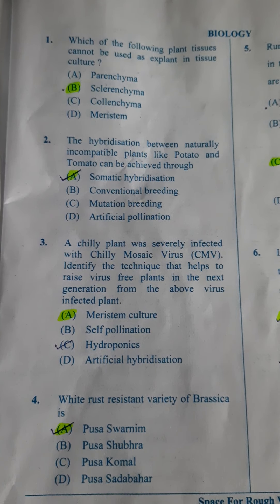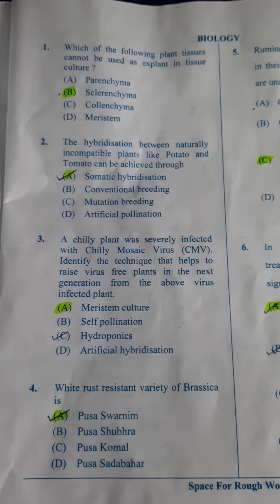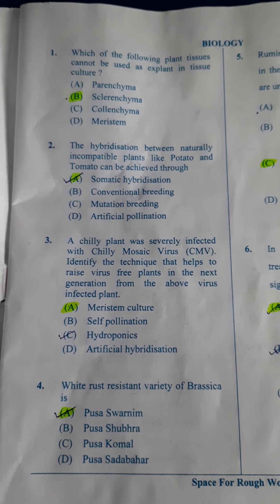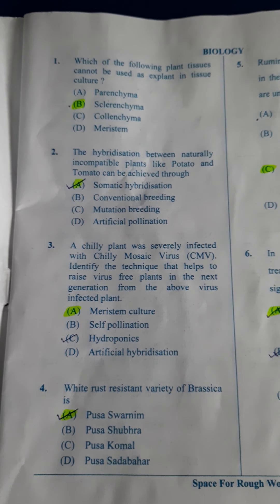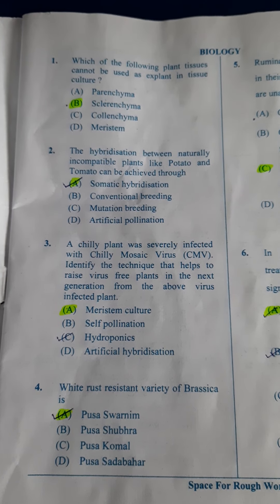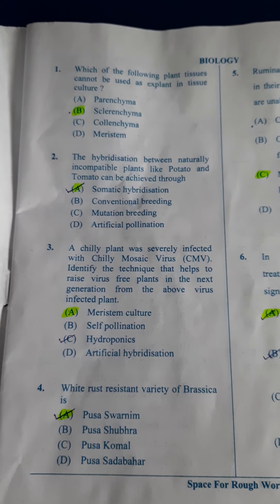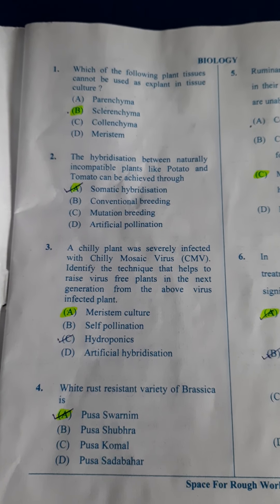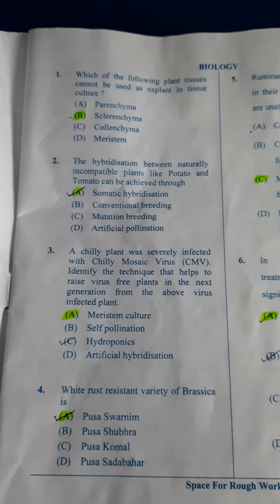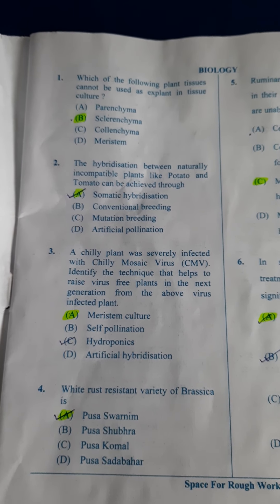Question number one: Which of the following plant tissue cannot be used as explant in tissue culture? In tissue culture you require a dividing cell. Sclerenchyma here is dead mechanical tissue and it will not be having protoplasts. So it cannot be used, and that's the reason the answer is B.